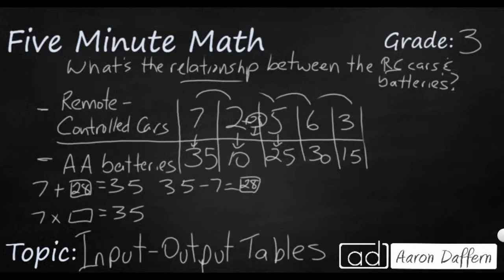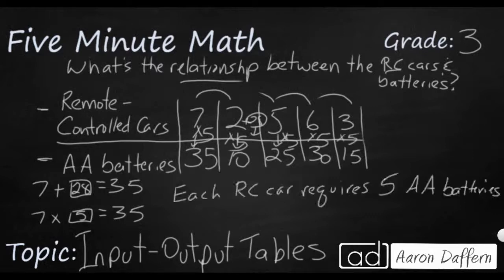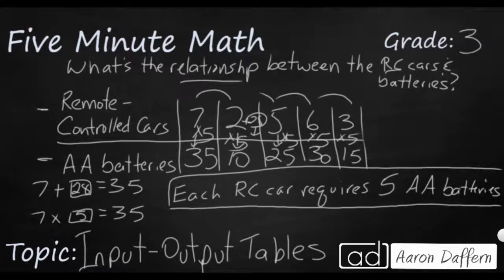7 times what makes 35? Well, I know my facts and that's 5. So can I multiply by 5? 7 times 5 makes 35. 2 times 5 makes 10. Yes. 5 times 5 makes 25. 6 times 5 is 30. Yes. 3 times 5 is 15. So if I were to write a sentence, I would say that each remote control car requires 5 AA batteries.